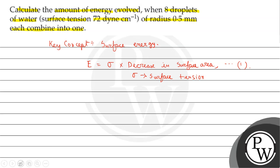Now let's see what values are given in the question. Surface tension sigma equals 72 dyne per centimeter. And according to the question there are 8 droplets.